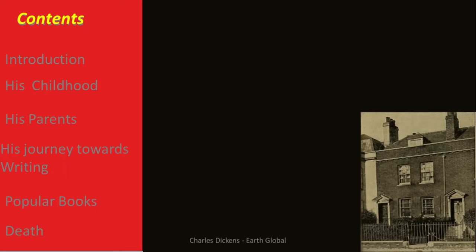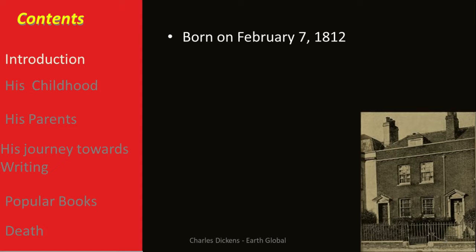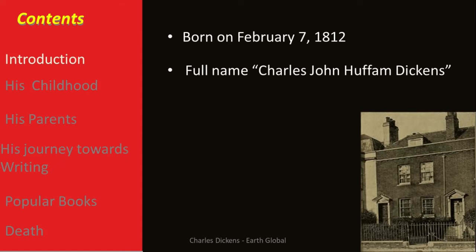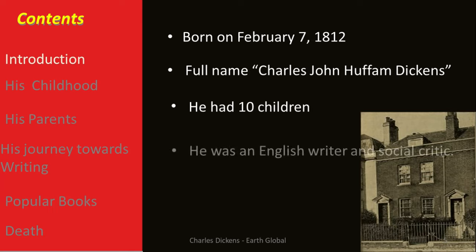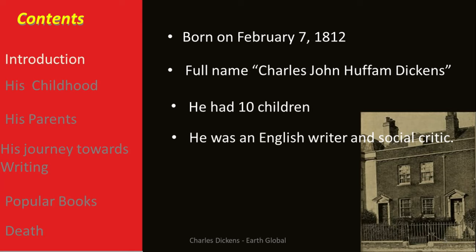So as a start, let's see who he was. Charles Dickens, whose full name was Charles John Huffman Dickens, was born on February 7th, 1812. In his life he had 10 children. Simply, he was a social critic and an English writer that was loved by almost all children in the world.